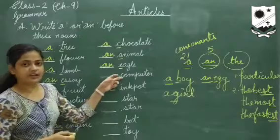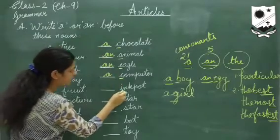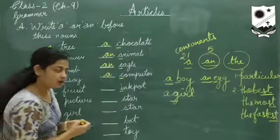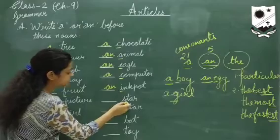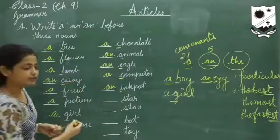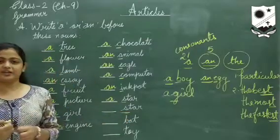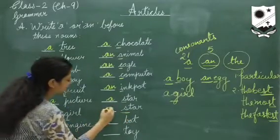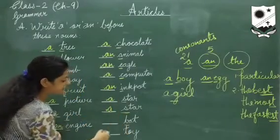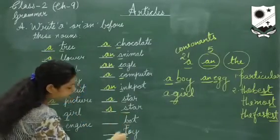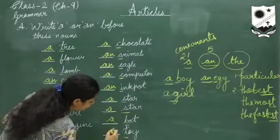Computer — begins with a consonant, so 'a computer'. Import — I is a vowel, so write 'an import'. Star — begins with a consonant, so write 'a star'. Bed — again a consonant, so 'a bed'. Toy also — a consonant, T. So write 'a' here. So we have done the first exercise.